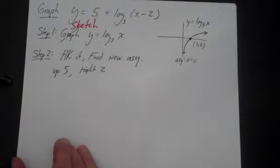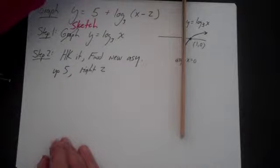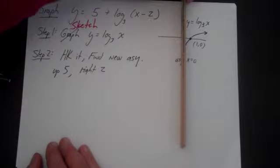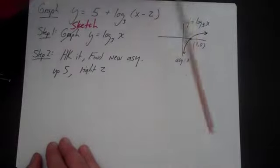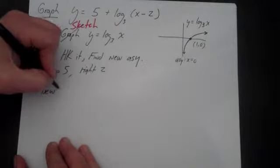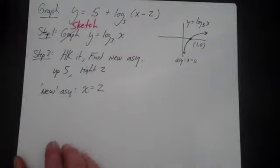So now let's think about the asymptote. The asymptote starts here at x equals 0. If it starts here at x equals 0, if we move it up 5, it still is the line x equals 0. When you move a vertical line up and down, it doesn't change. Now we're going to move it right 2. The new asymptote is going to be x equals positive 2.